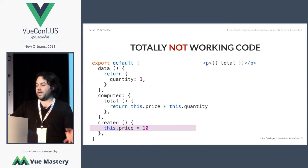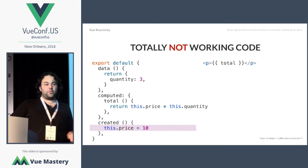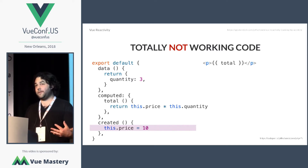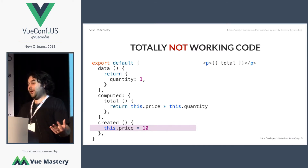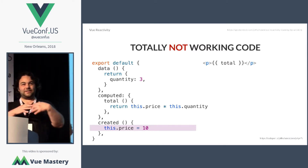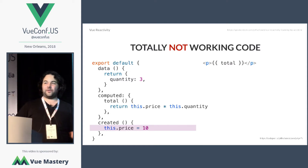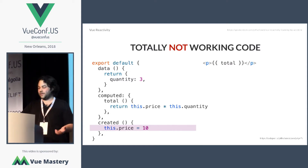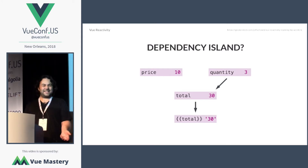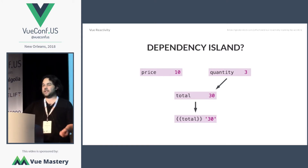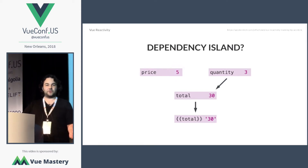It won't update when we update this.price. And why is that? Remember that dependency tree Vue has built for us — but it's not omnipotent. It doesn't know everything we want to do automatically; we have to tell it. In this case, we've actually created a dependency island with price not being connected to everything else. And when we update it, nothing else knows what to do.